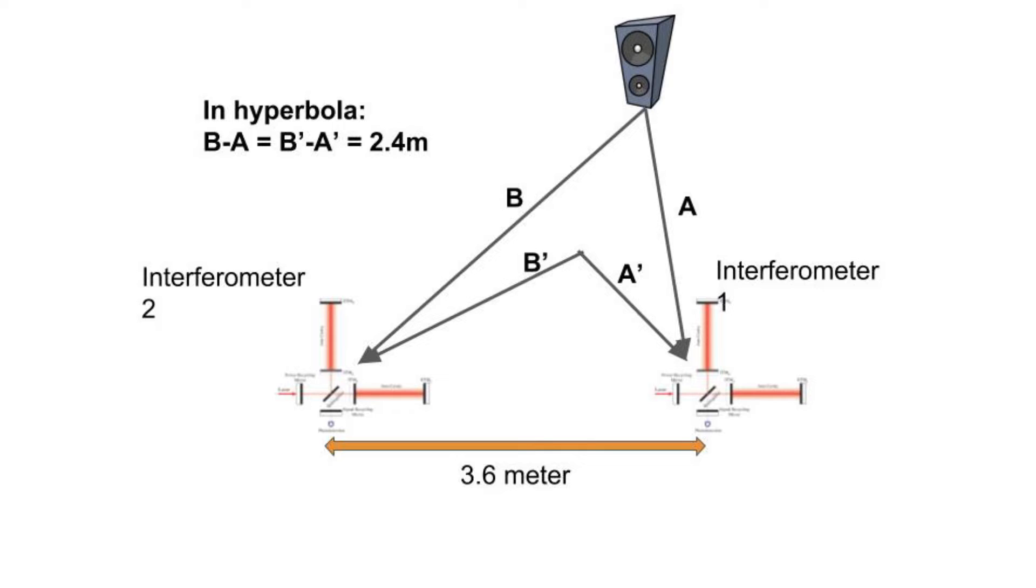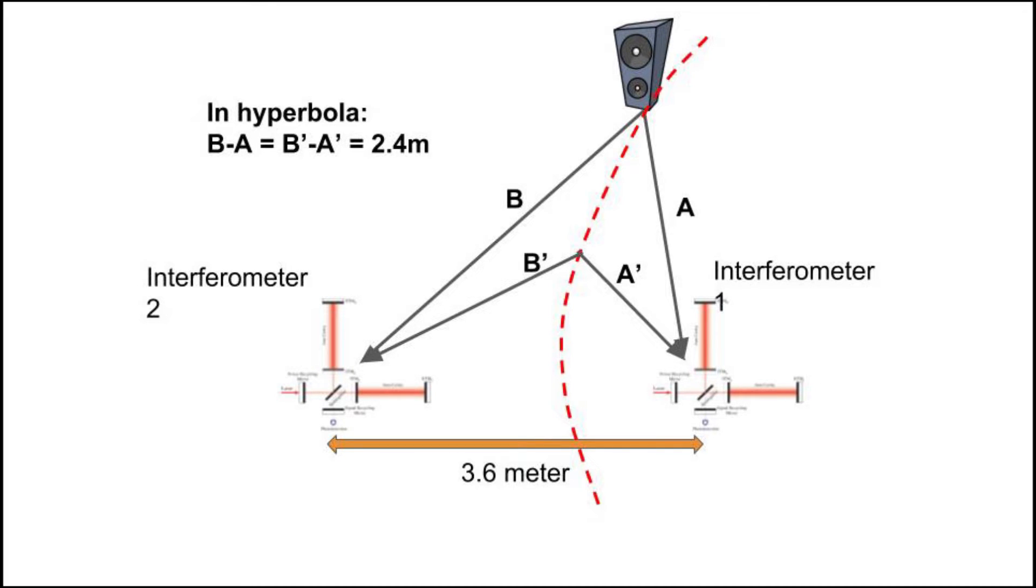If we plot all possible locations of the source that can result in the same path difference, we can form a hyperbola as dotted in red. So the speaker can lie anywhere on that hyperbola.